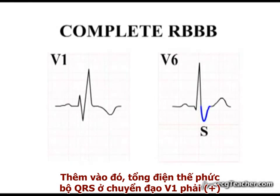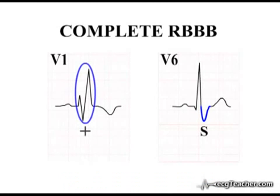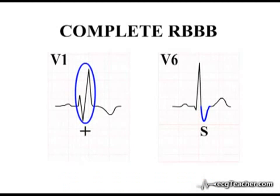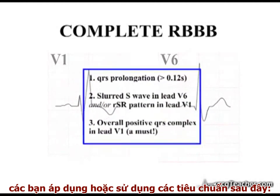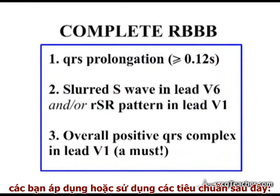Also, the QRS complex in lead V1 must be overall positive to make this diagnosis. To identify complete right bundle branch block, apply the following criteria.